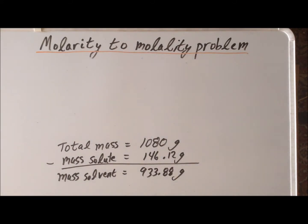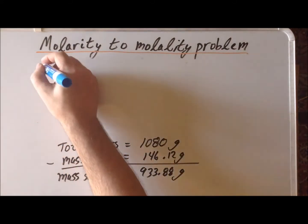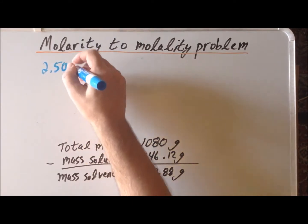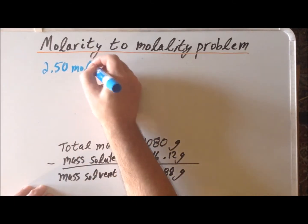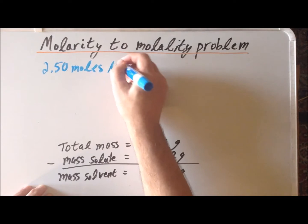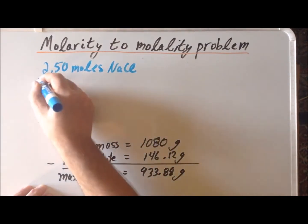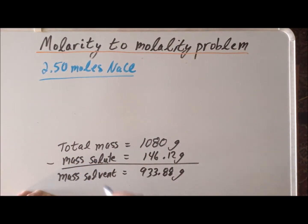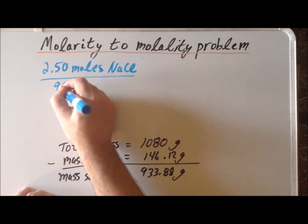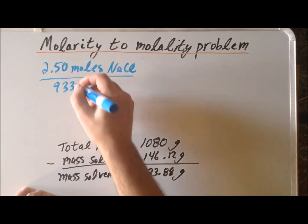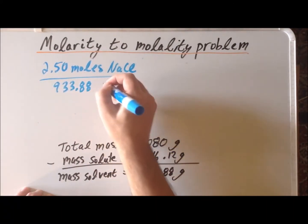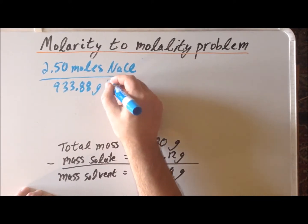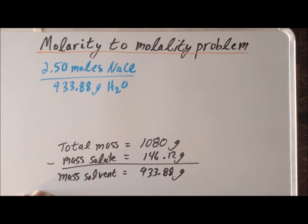We know that we have, in our solution, 2.50 moles of the solute, which is our sodium chloride. And it's actually in a mass of solvent which is 933.88 grams. This is H2O because our solvent is going to be water here.